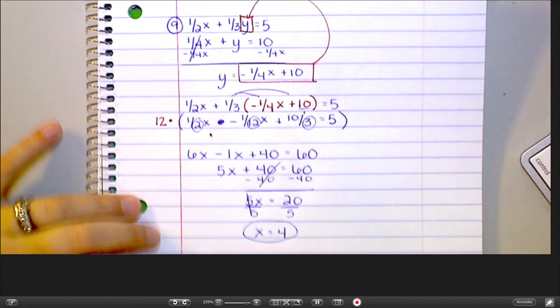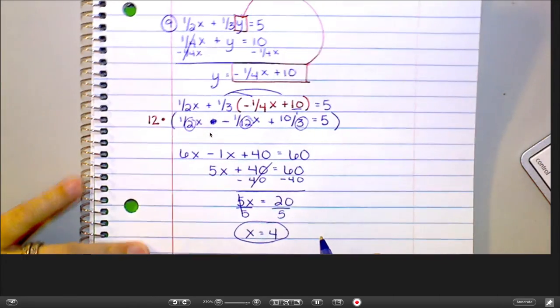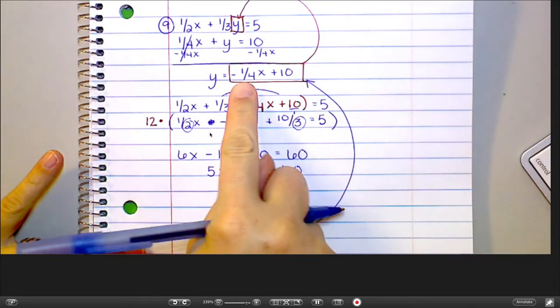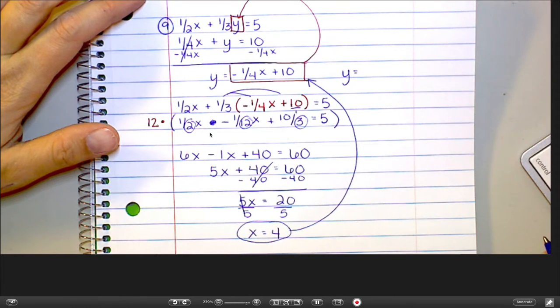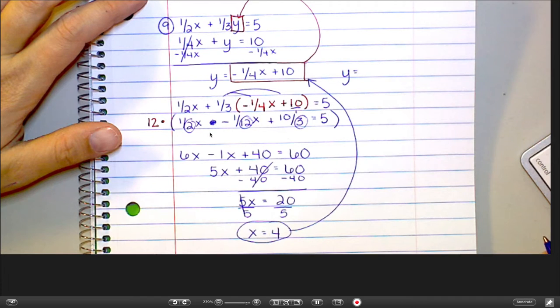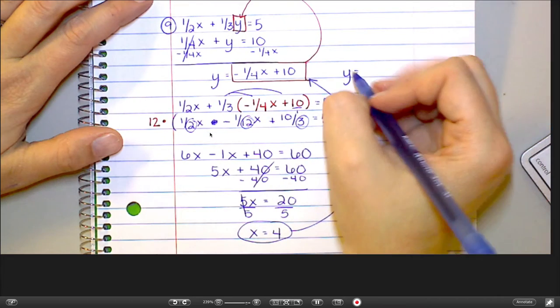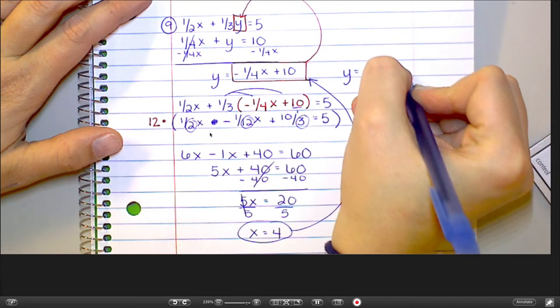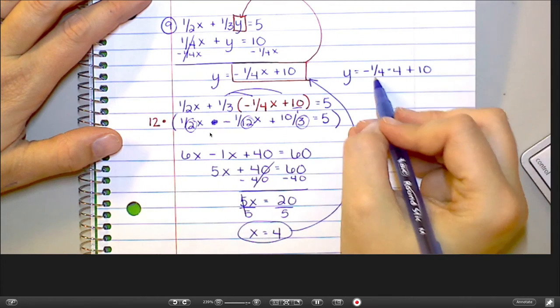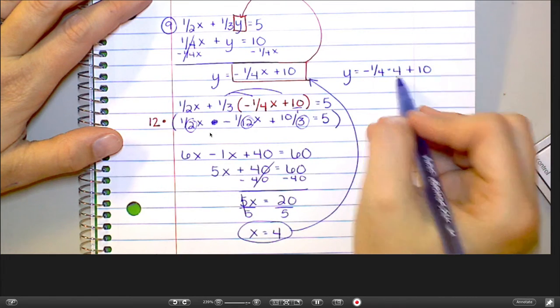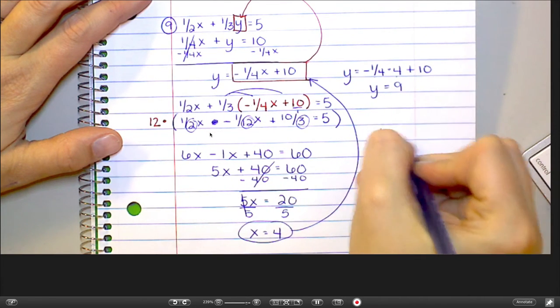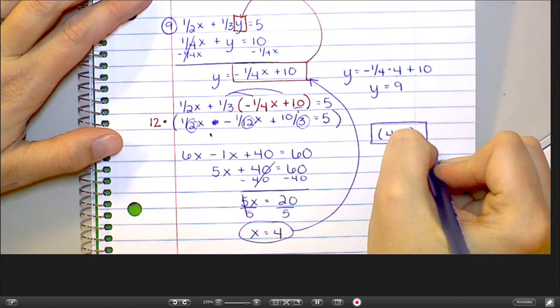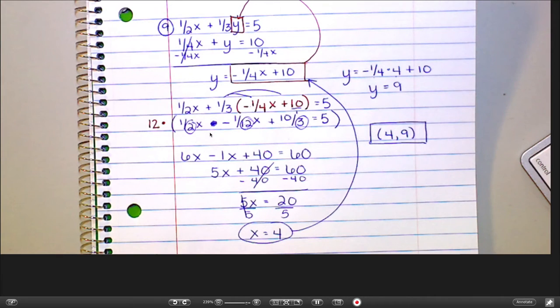Now, I would go back and plug that back into where we found the y equals up here. I would plug it in here. And I know that looks scary because it has a fraction in it, but it's not going to be bad with a 4. So you're going to have y equals negative 1 fourth times 4 plus 10. Well, negative 1 fourth times 4 is just what? Negative 1. So this is negative 1 plus 10, which is 9. And so your final coordinate here would be 4, 9. That was a tough one.